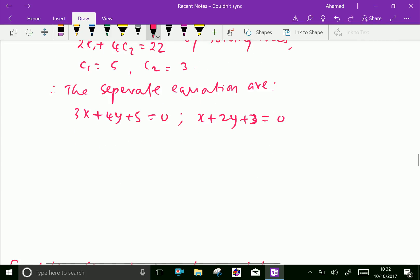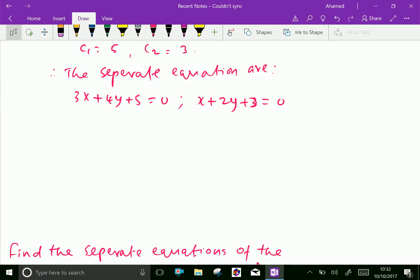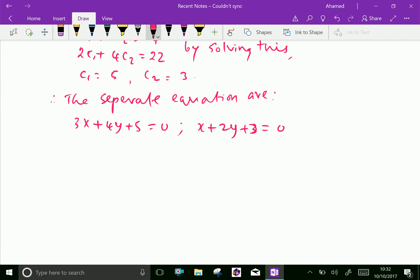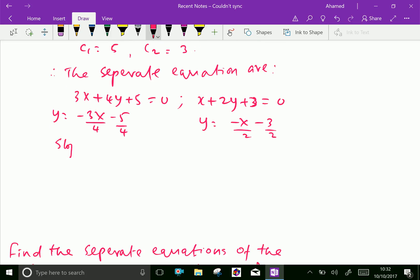Now, we will get angle between them. Here, the first equation becomes in terms of y, that is y equal minus 3x minus 5 over 4. The second equation becomes y equal minus x minus 3 over 2. Here, the slope m1 equal minus 3 by 4. The slope m2 equal minus half.